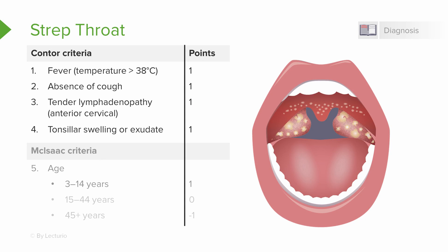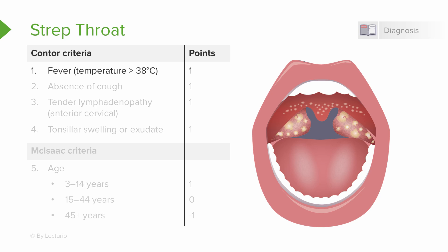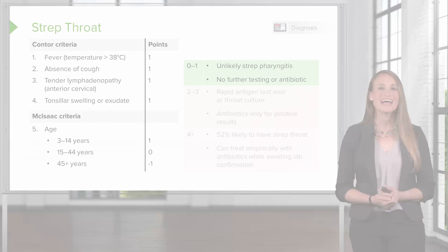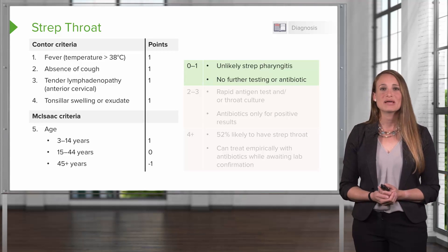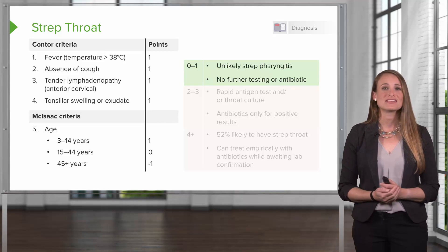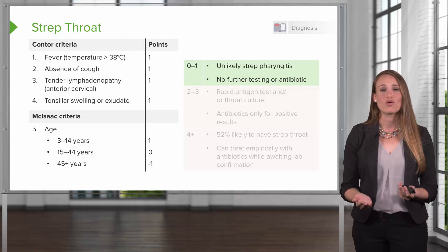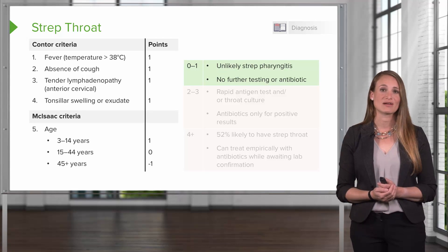The MacIsaac criteria adjusts the score based on age. Strep is most prevalent in the three to 14-year-old population, so kids gain another point. Patients aged 15 to 44 neither add nor subtract points. Since strep is less common in older adults, patients over 45 have a point subtracted from their score. If the patient scores zero to one points, strep pharyngitis is unlikely — it's probably viral — and no further testing or antibiotic treatment is recommended.